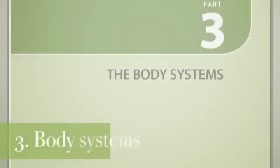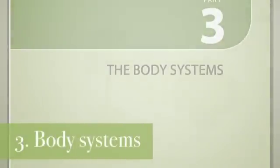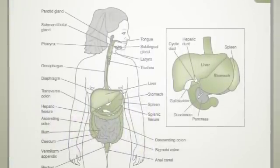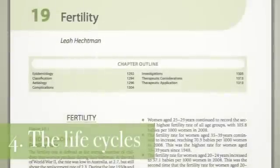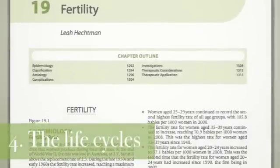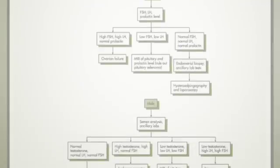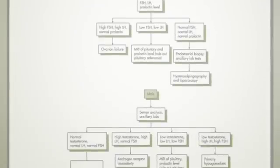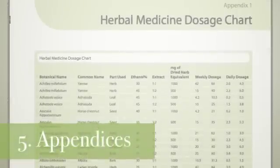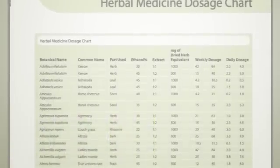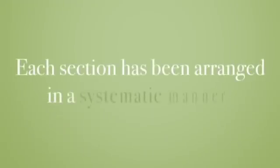Part 3, Body Systems, covers each system of the body and the related relevant major conditions. Part 4, The Life Cycles, provides a naturopathic perspective for treating major life cycle stages, including fertility, pregnancy, breastfeeding, paediatrics and adolescence. And finally, Part 5 includes the appendices, which provide clinically useful appendices relevant for the student, lecturer and clinician.